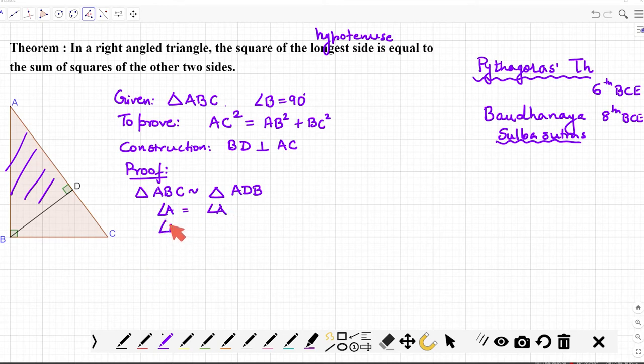Why do I say that? Because angle A is common to both triangles. Look carefully, angle A is common and there is a 90 degree as well. So angle B here is 90 and angle D here is 90, isn't it? So which criteria we are using? The criteria is AA, that is angle-angle similarity criteria.